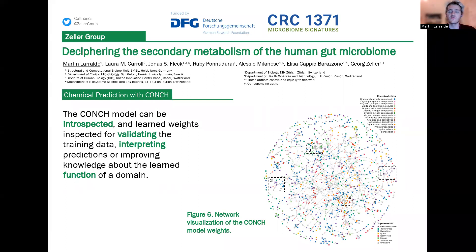Several regions of the network visualization can be inspected. For instance, in Region 1, we can see a tryptophan halogenase domain being linked to the production of halogenated compounds or allobenzenes. In another part, a domain of unknown function has been learned to be associated with the formation of thiazole and thiazoline functions, which is particularly interesting as this entirely data-driven approach could lead to the discovery of novel functions for certain domains.